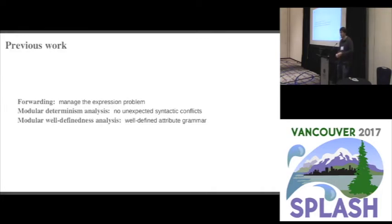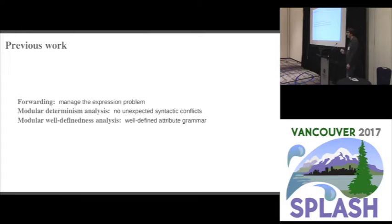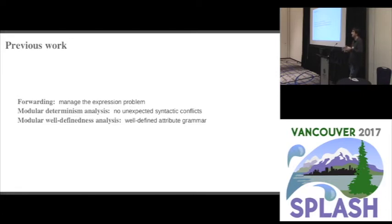In previous work we have a number of modular analyses we can use. The modular determinism analysis is an analysis over the syntax being added to a host language that ensures new syntactic constructs will not conflict with each other except in an extremely well-defined way — the same kind of conflict you can get with libraries when you import things that have the same name. The modular well-definedness analysis is also previous work that ensures the final composed compiler is a well-defined attribute grammar. These are things extension developers can apply to their extensions independently, providing guarantees about the final composed compiler the end user puts together.